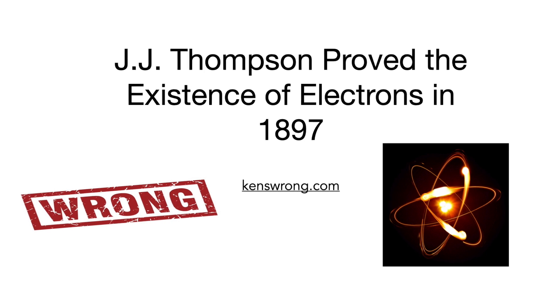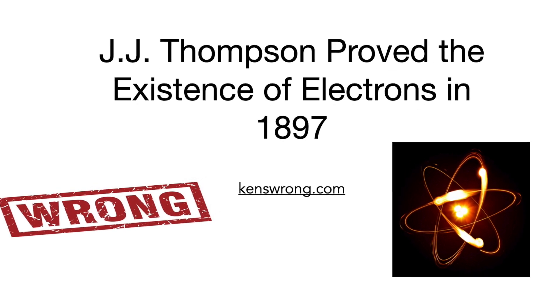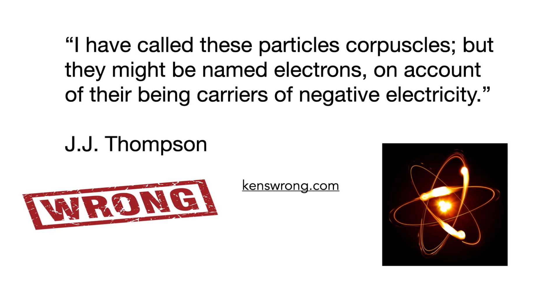J.J. Thompson proved the existence of electrons in 1897. Thompson discovered that cathode rays consist of tiny corpuscles emitted from within the cathode. He said, I have called these particles corpuscles,